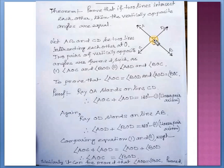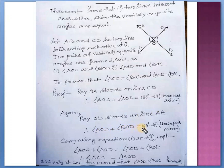Again, ray OD stands on line AB. So again two angles are formed. Therefore, angle AOD plus angle BOD equals 180 degrees — this is equation number 2, by the linear pair axiom.